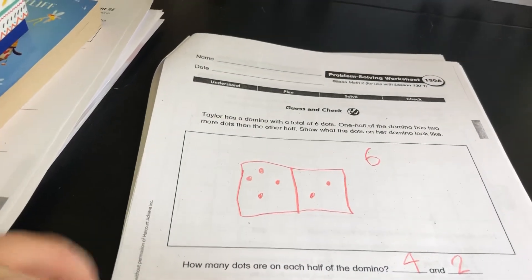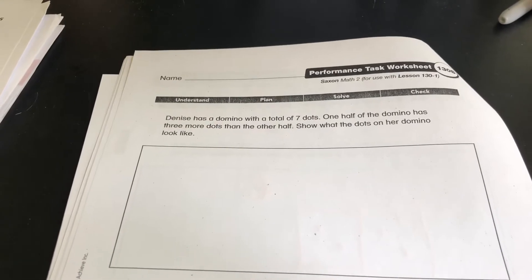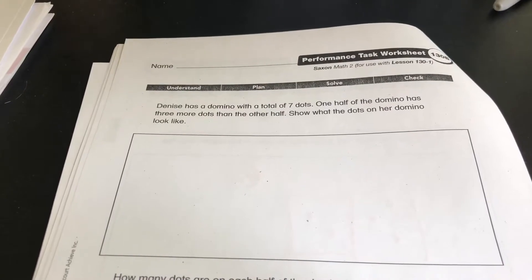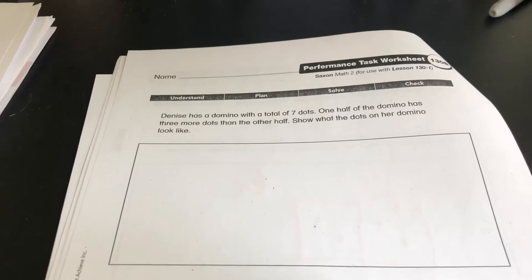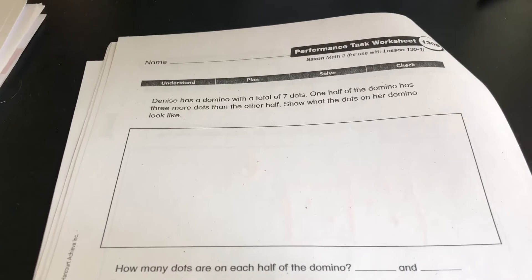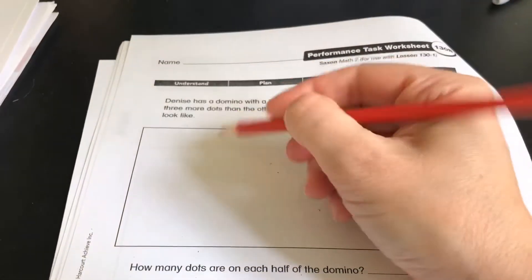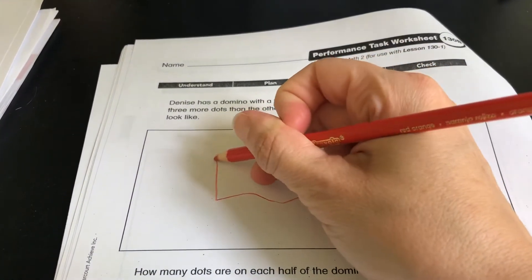All right, let's look at this page right here. It says, Denise has a domino with seven dots. One half of the domino has three more dots than the other half. Show what each side of the domino looks like. Okay. So let's make ourselves a domino.